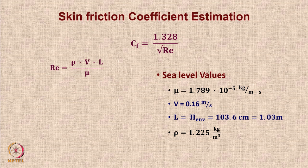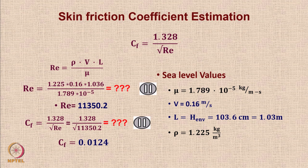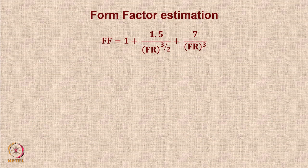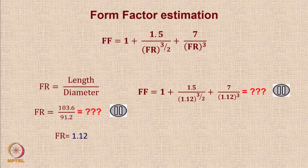In the component build-up method, drag is calculated as a product of three components. The skin friction coefficient is C_f = 1.328 / √Re, so we first calculate the Reynolds number Re = ρVL / μ. For the form factor, we need the fineness ratio, which is length divided by diameter: 103.6 cm length and 91.2 cm breadth gives a fineness ratio of 1.12. Please calculate the form factor yourself — remember that just watching will not make you learn; you learn only by doing.